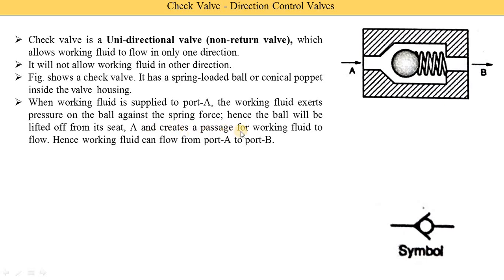This creates a passage for the working fluid to flow. Hence, the working fluid can flow from port A to port B. When the ball is seated, the working fluid is blocked from A to B. But due to the pressure of the working fluid, the ball moves away from its seat and opens the passage. So the passage is open and whatever working fluid comes from port A is supplied to port B. Port A is the inlet and port B is the outlet.